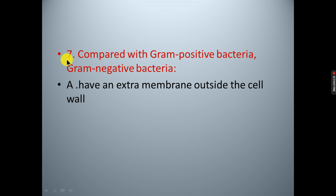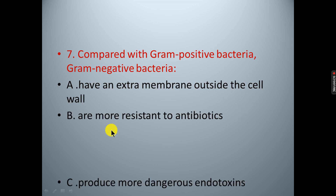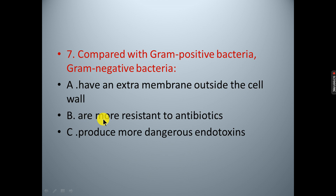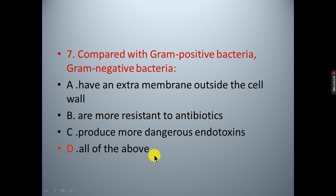Question seven: Compared to gram positive bacteria, gram negative bacteria: A. have an external membrane outside the cell wall; B. are more resistant to antibiotics; C. produce more dangerous toxins; D. all of the above. The correct answer is D — all of the above.